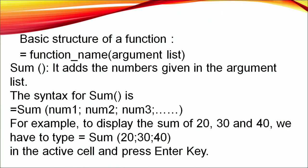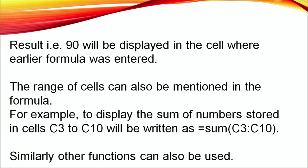For example, the SUM function adds the numbers given in the brackets as argument list. Its syntax is: =SUM(number1; number2; number3; ...). To display the sum of 20, 30, and 40, type =SUM(20;30;40) and press Enter — the formula disappears and the result appears in the cell. A range of cells can also be mentioned; for example, to sum cells C3 to C10, write =SUM(C3:C10). Other functions like AVERAGE, MAX, and MIN can be used similarly.